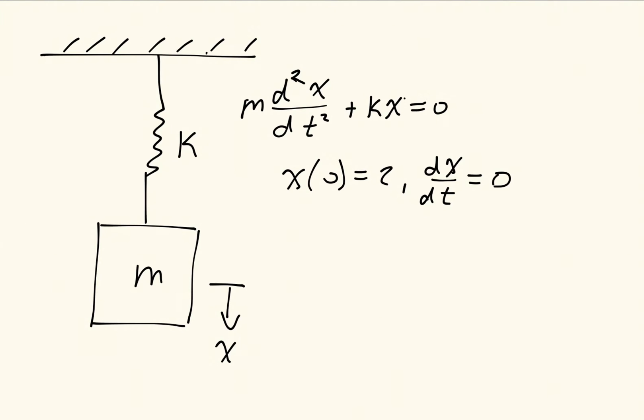In this video, I'm going to show you how we can solve a spring mass system. This system is described by the differential equation m, the mass of the object, times d squared x dt squared plus kx, where k is our spring constant, is equal to 0. And x is the displacement of the mass away from equilibrium, and t is time.